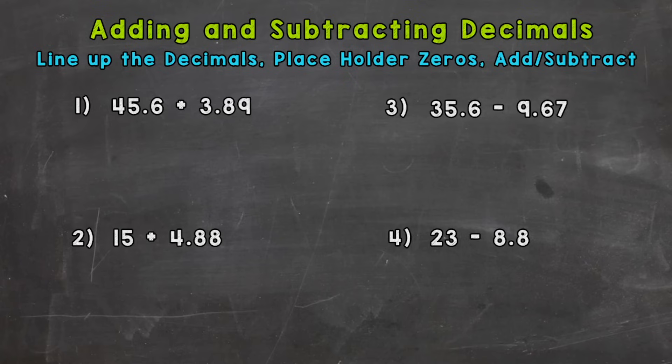So let's jump right into number one. For number one we have 45 and 6 tenths plus 3 and 89 hundredths. So our first step, we need to set the problem up, rewrite it vertically or up and down, and we need to line up the decimals. So we'll write out 45 and 6 tenths plus 3 and 89 hundredths. The decimals are lined up, therefore all the places are lined up.